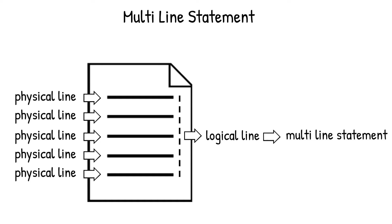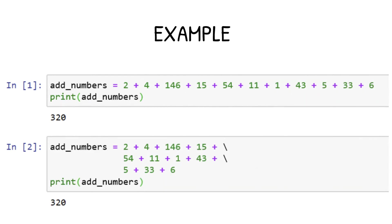A multi-line statement is when multiple physical lines of code contain a single logical line for the interpreter. The combination of those multiple physical lines is known as a multi-line statement. Multi-line statements are usually written to improve the readability of the code — when a physical line crosses a certain width, we can break it into multiple physical lines, which still represent the same logical line.